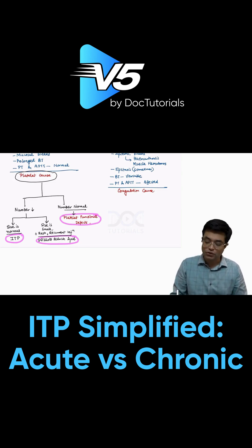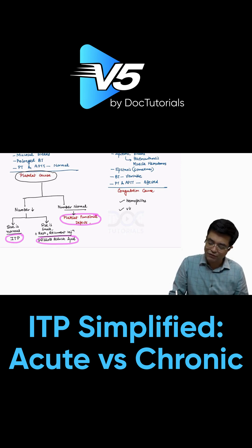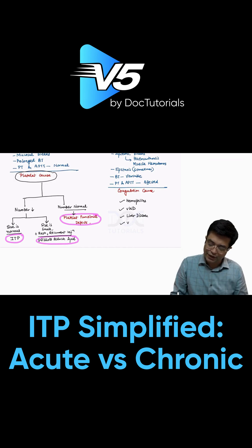When you talk about coagulation causes of bleeding, there can be possibilities like haemophilias, von Willebrand disease, liver disease, vitamin K deficiency, and lastly the patient can have DIC.